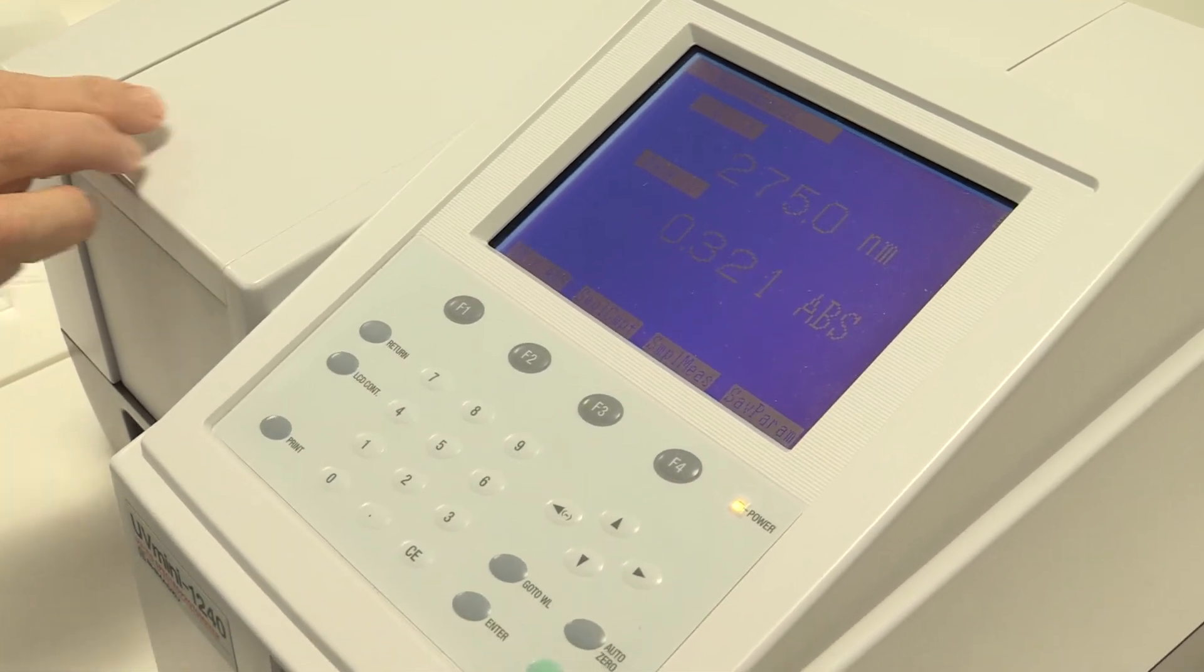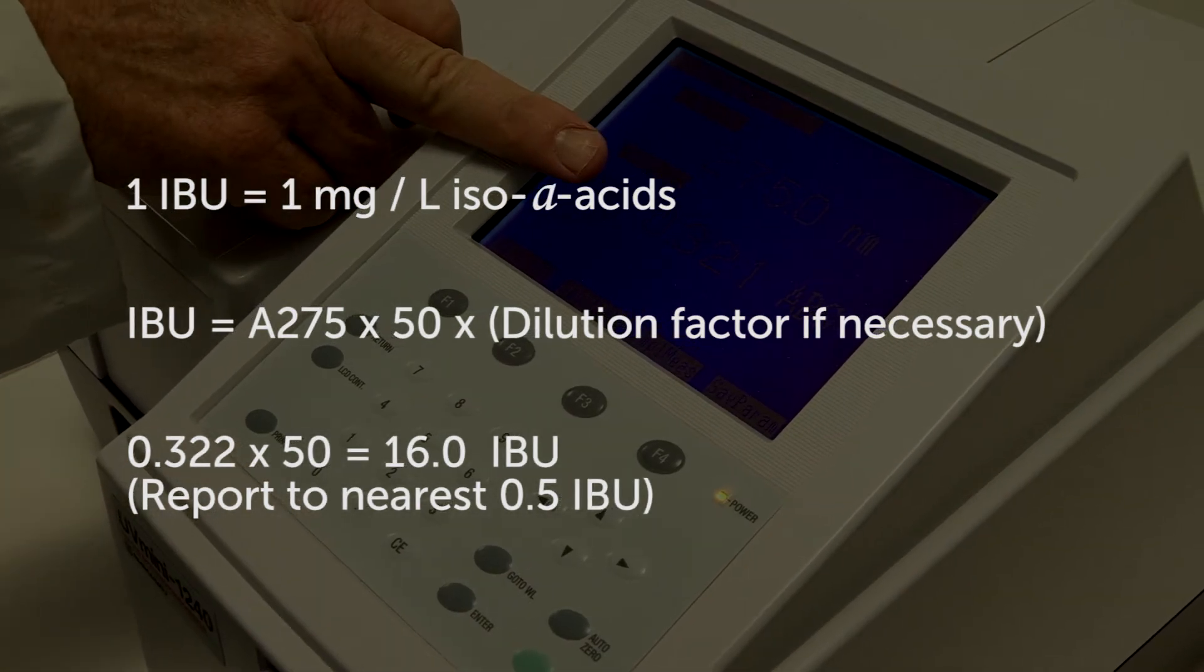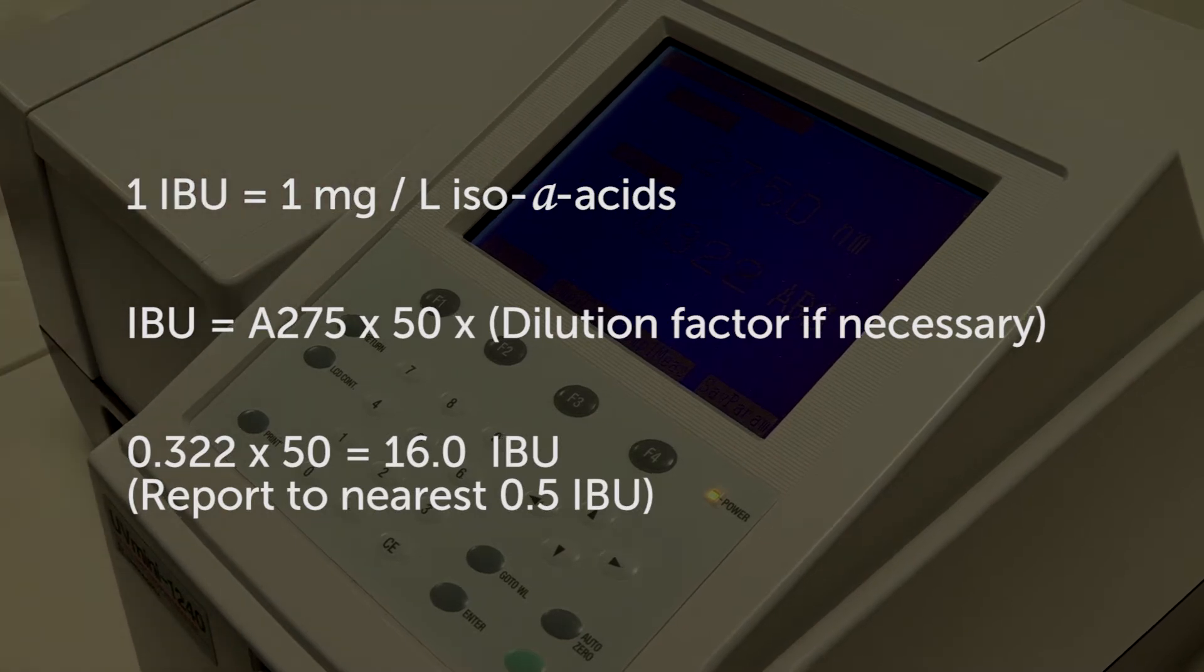The reading from the spectrophotometer is multiplied by 50 for iso-alpha acids derived from kettle boiling. Tetrahop and other hop extracts may have different conversion factors. Some preservatives such as benzoates and potentially dry hopping can also interfere, so under these circumstances HPLC is advised.